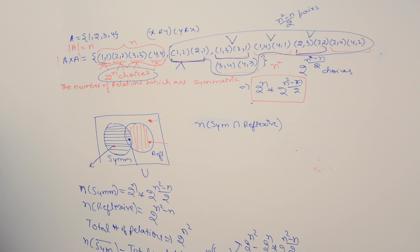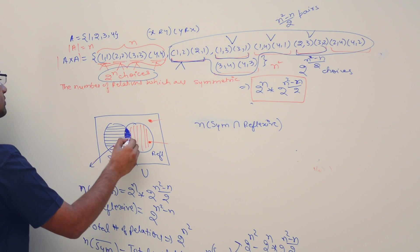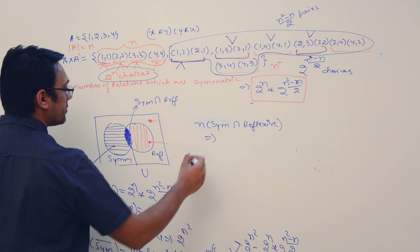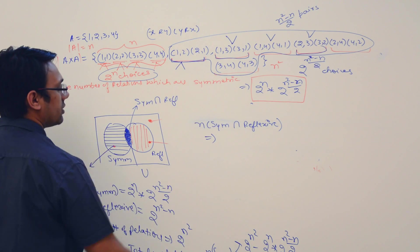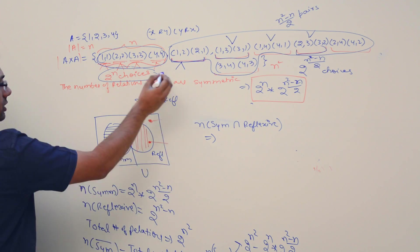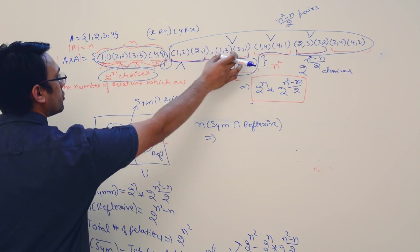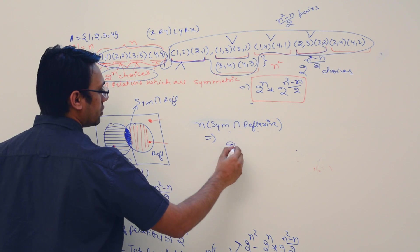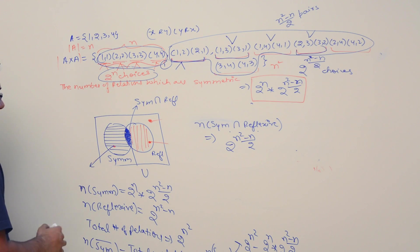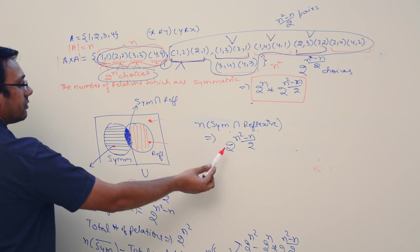The number of relations which are symmetric as well as reflexive: for a reflexive relation, the diagonal elements must all be present, so we have no choice for them — that contributes a factor of 1. For the off-diagonal pairs we still have 2^((n²−n)/2) choices. So the number of symmetric and reflexive relations is 2^((n²−n)/2).